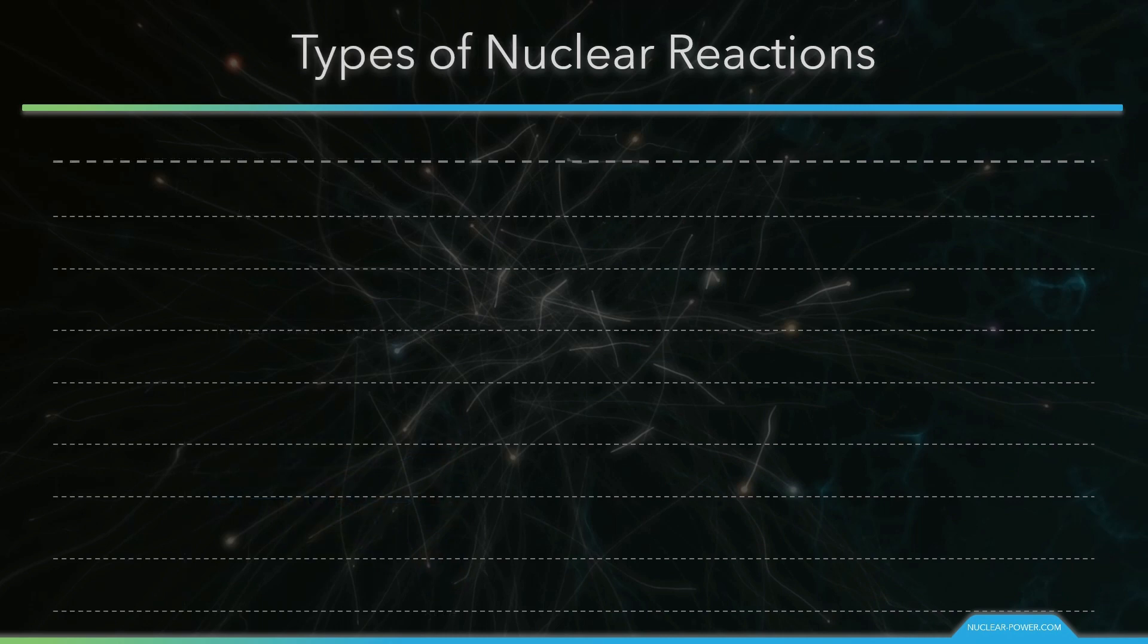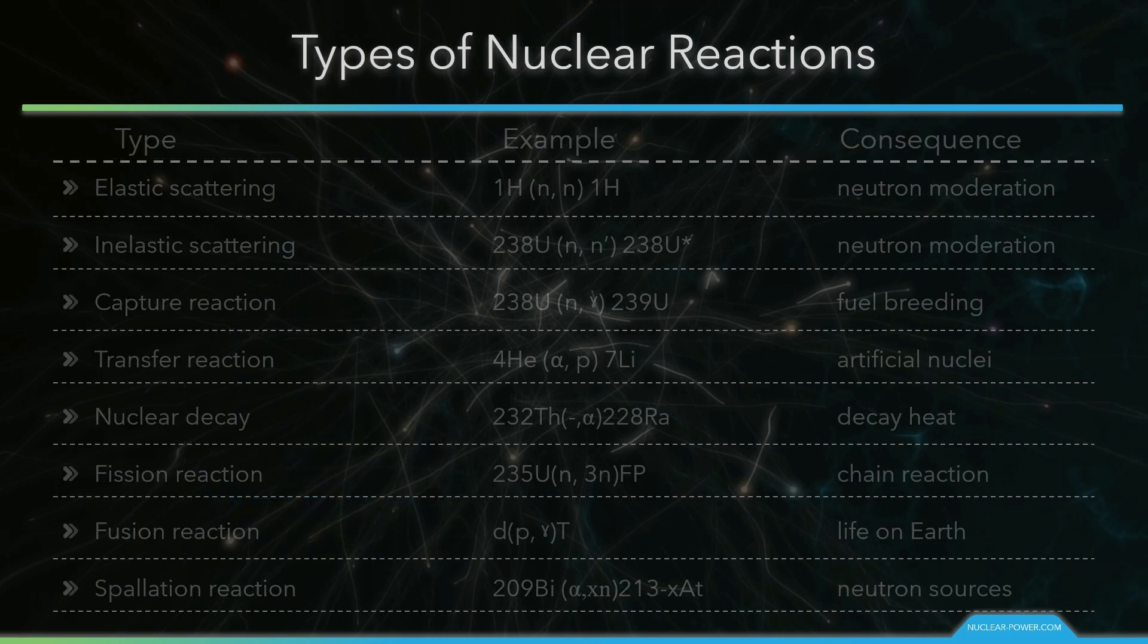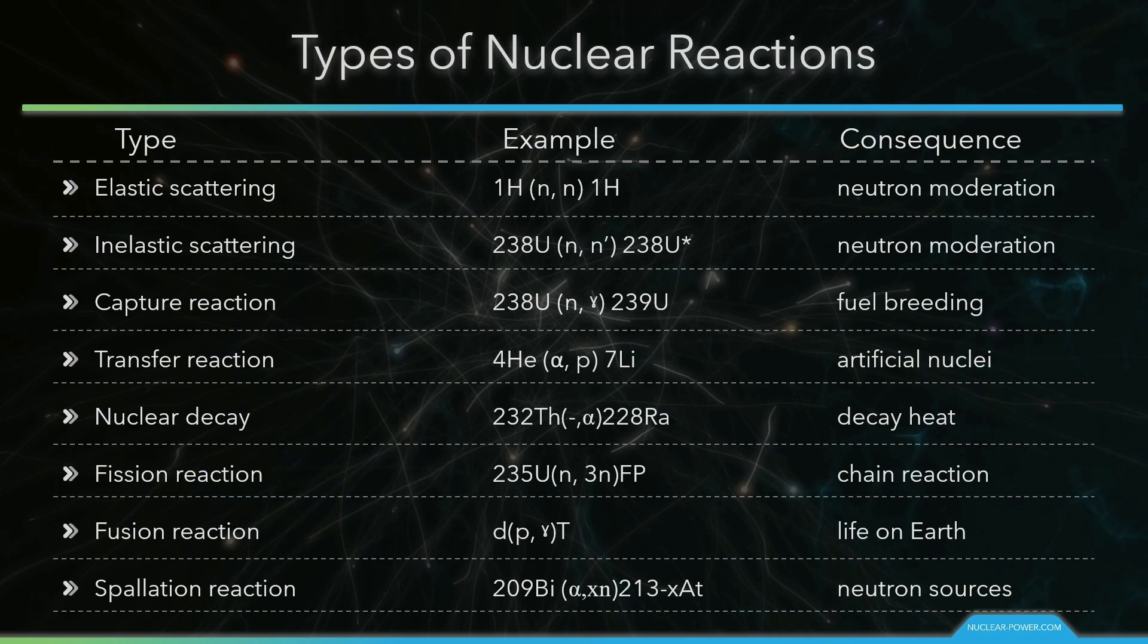Although the number of possible nuclear reactions is enormous, nuclear reactions can be sorted by type. For each type of reaction, we will show a typical example and we will use a compact notation.